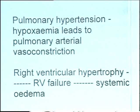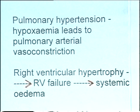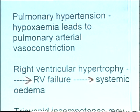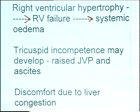Pulmonary hypertension and cor pulmonale: hypoxaemia leads to pulmonary arterial vasoconstriction, which increases pressure in the pulmonary artery, meaning the right ventricle has to work harder. Therefore, right ventricular hypertrophy occurs, which will lead to right ventricular failure, damming back and causing systemic oedema. The pressure on the right side of the heart can mean that tricuspid incompetence may develop, causing raised jugular venous pressure, ascites, and congestion of major organs such as the liver.